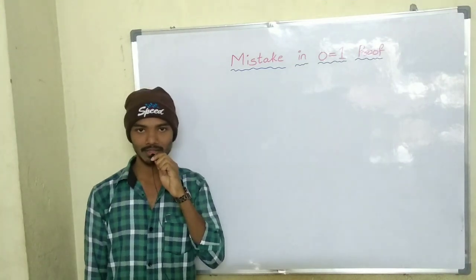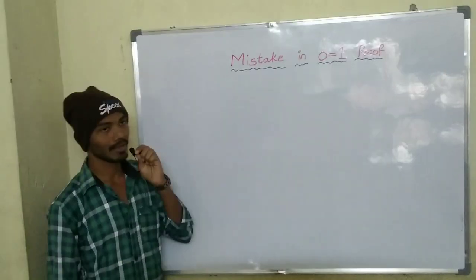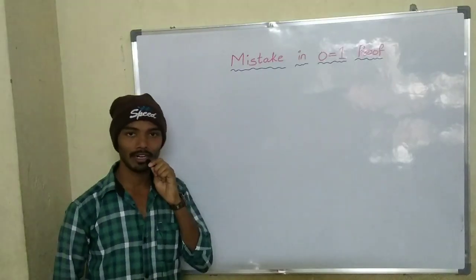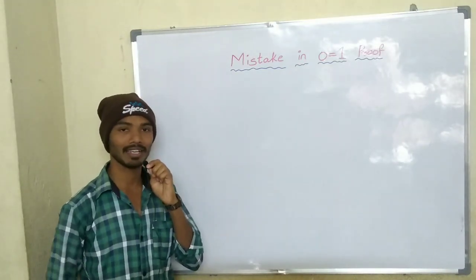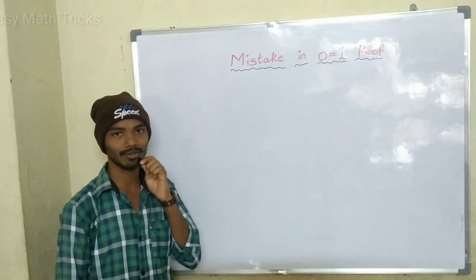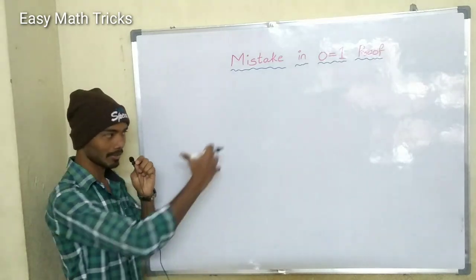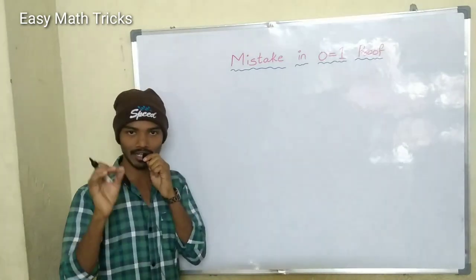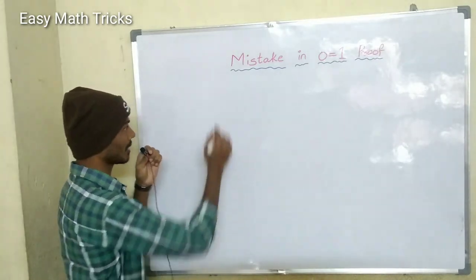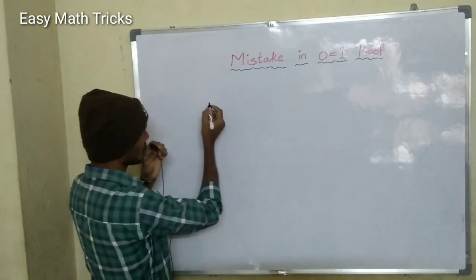Hi Andy, welcome to easymatrix. Now we have to choose: 0 is equal to 1, prove. But if you have any mistakes, you can try it. First, we have to prove 0 is equal to 1.